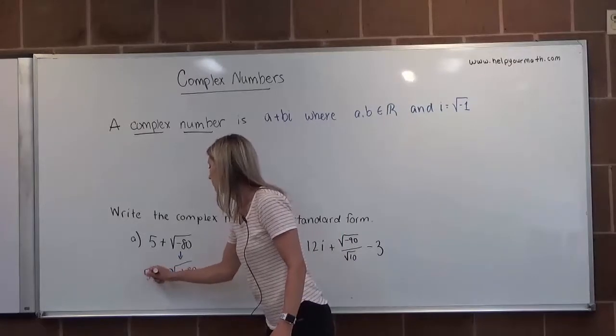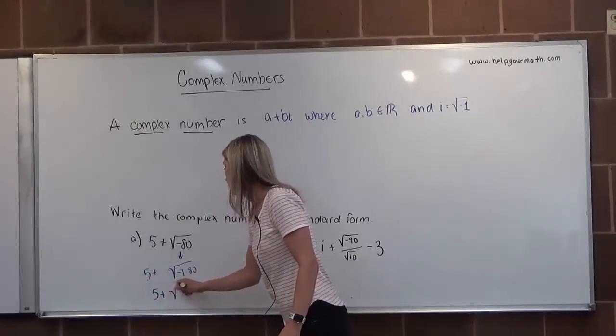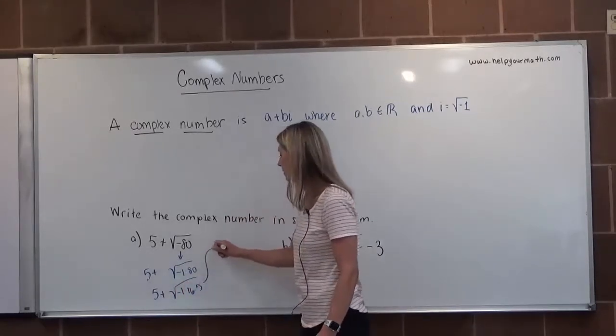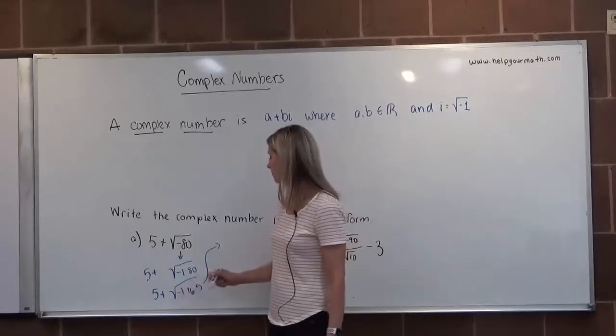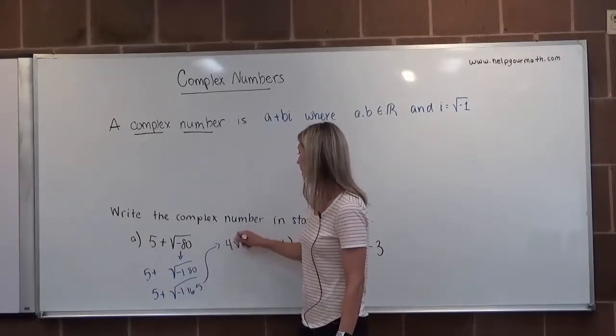I'm going to bring down my plus five. And then it would be five plus, and I can rewrite this as negative one times 16 times five. The square root of negative one will be i. The square root of 16 is four. The square root of five is the square root of five.